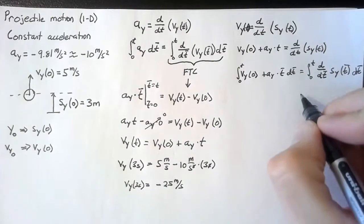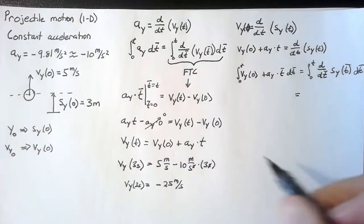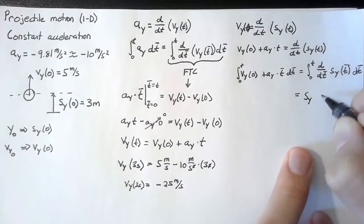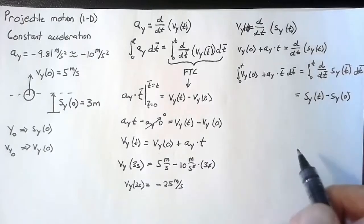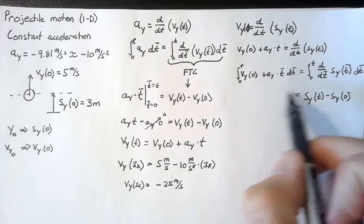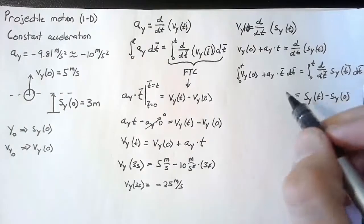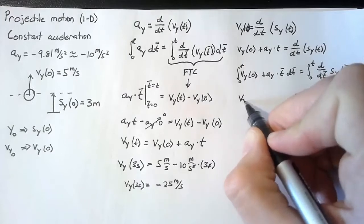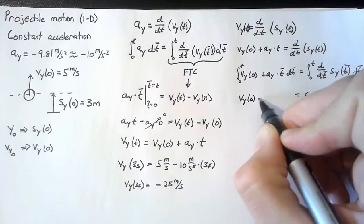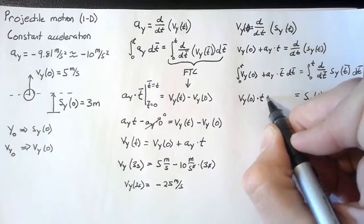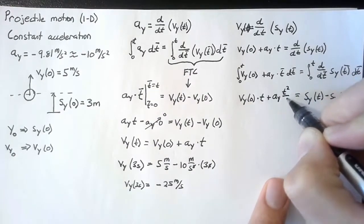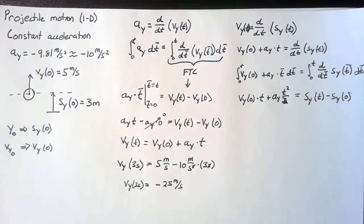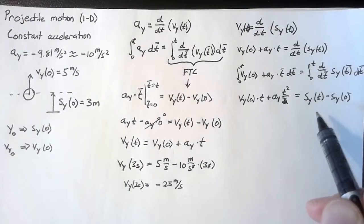Once again, this right hand side, we just use the fundamental theorem of calculus. And we end up with the position in the y direction at time t minus the position in the y direction at time 0. And again, the left hand side, we just do traditionally. So this becomes v_y at time 0 multiplied by t plus a_y times t² divided by 2. So now let's simplify and come up with our final expression.